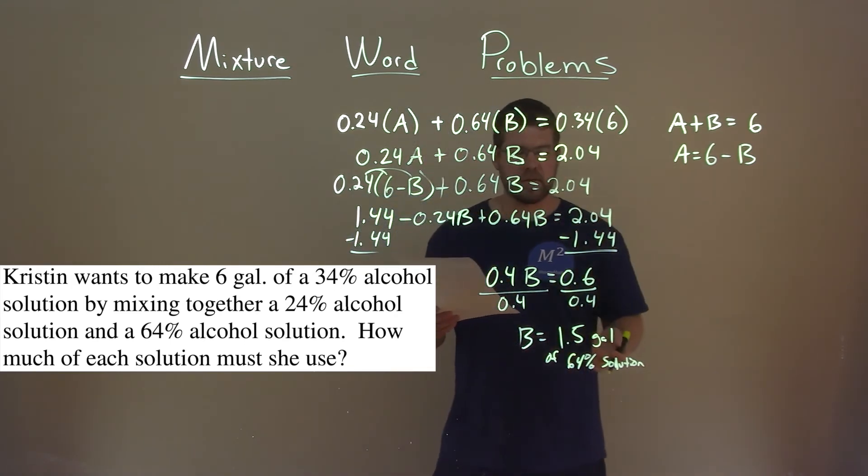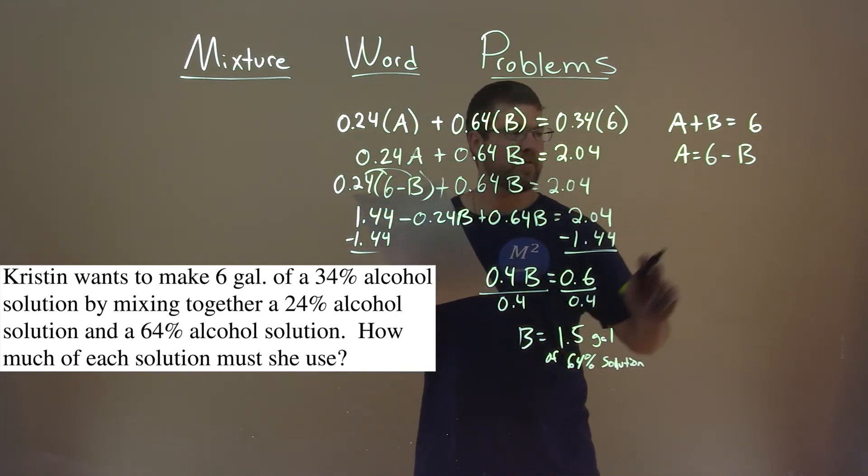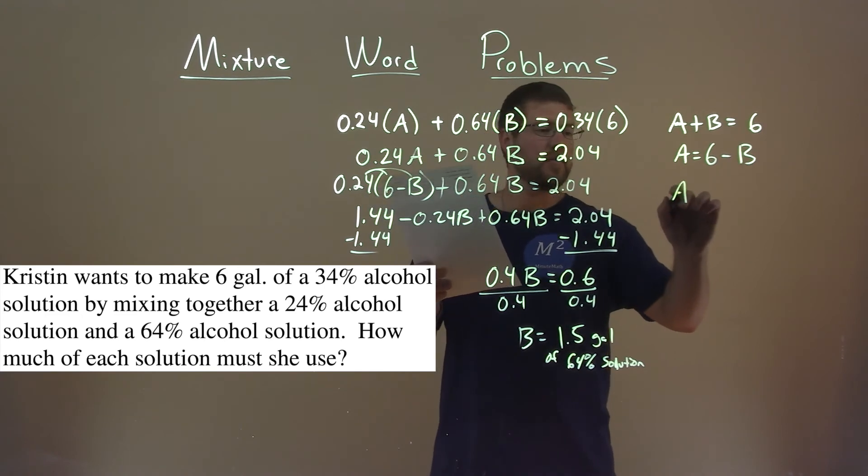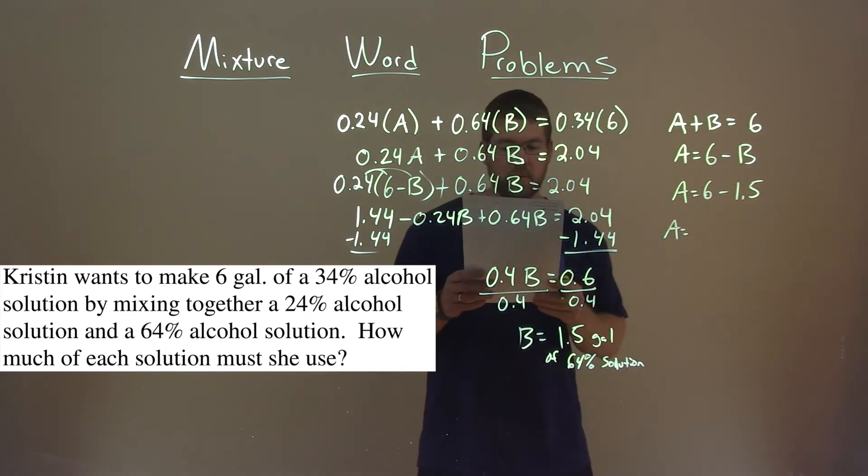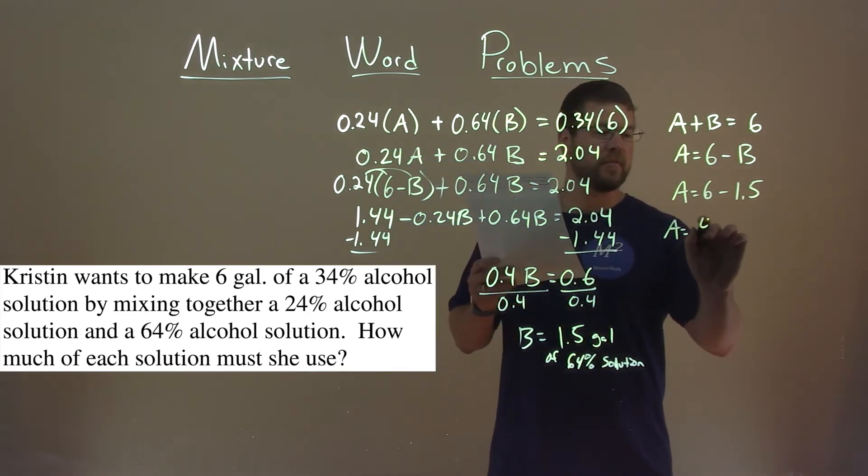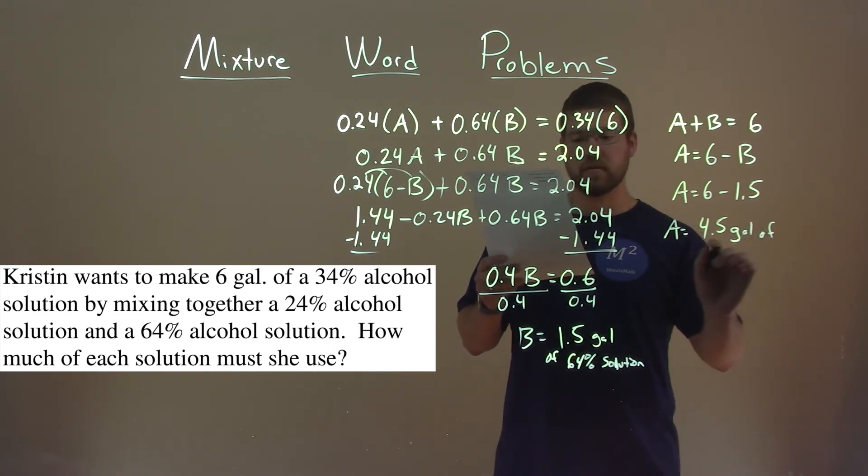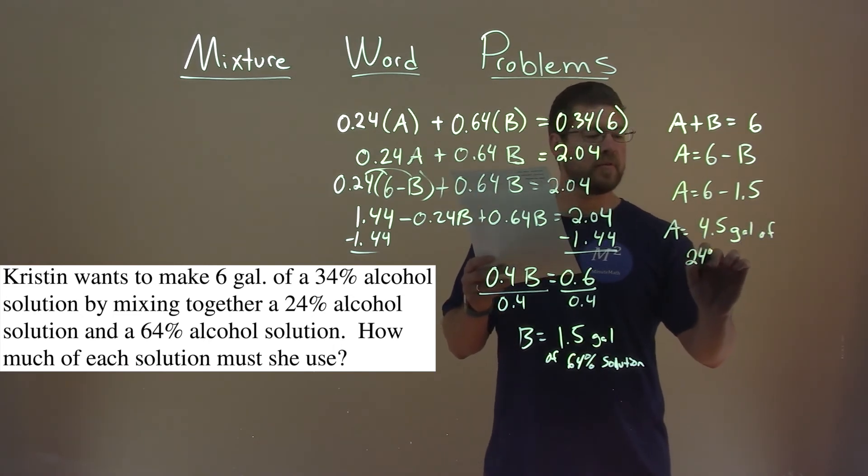We still have to find the other one. And it's actually the easiest part. We take that 1.5 and plug it in for this B. Because A equals 6 minus that value, 1.5. And so A equals 6 minus 1.5, which is 4.5. And it's 4.5 gallons of our first solution, which is 24% solution.